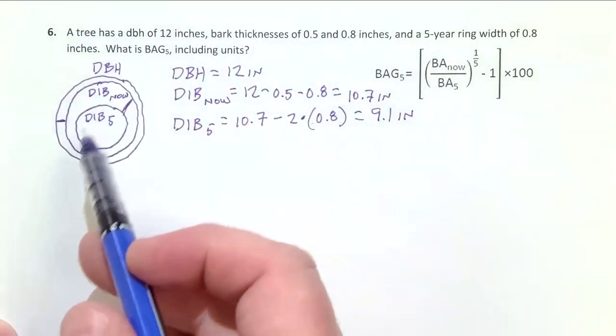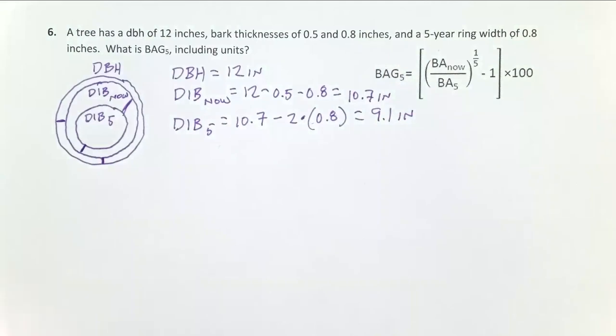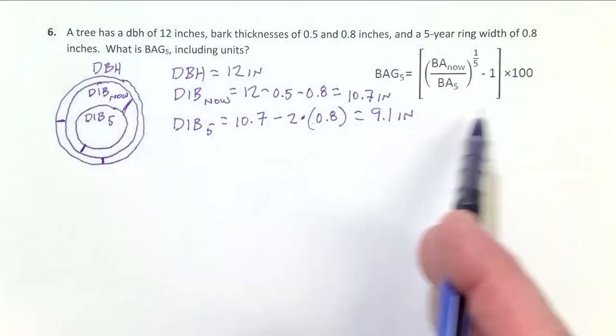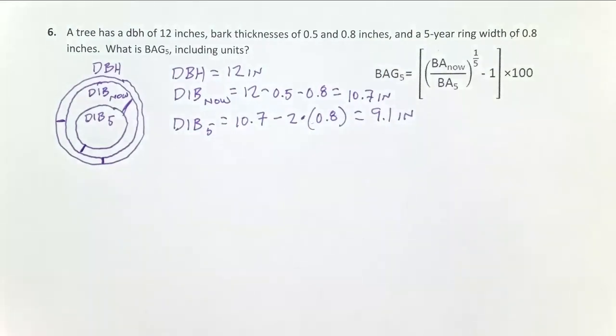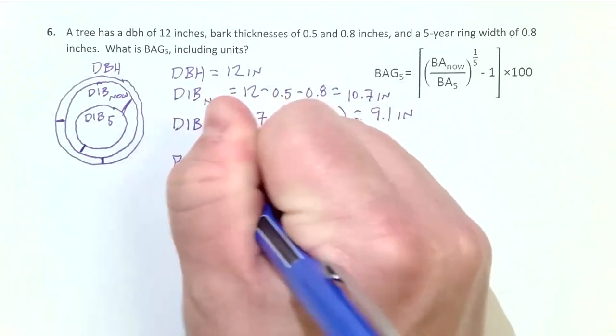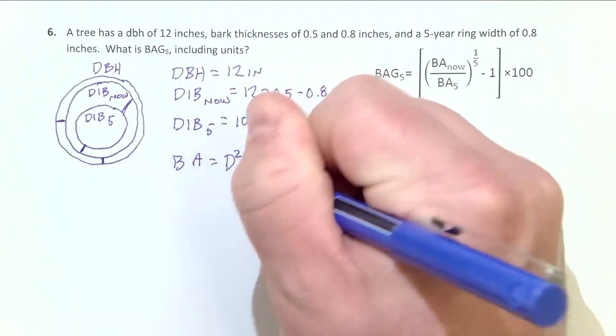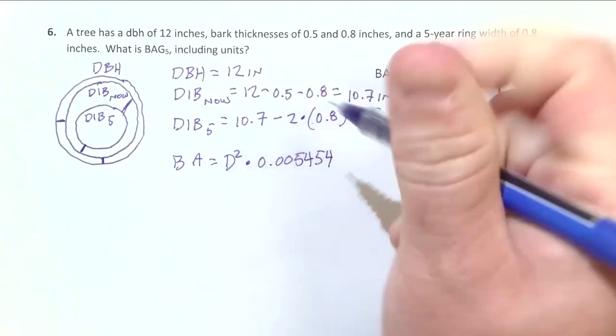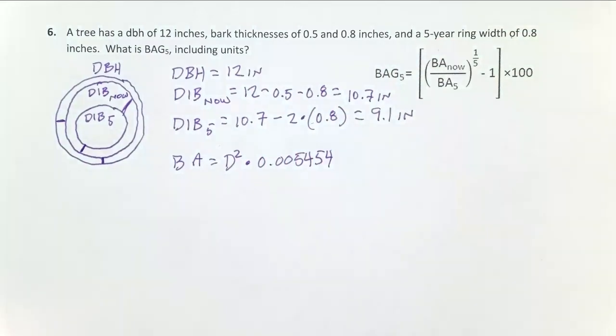So now we have these three diameters. We really aren't going to use DBH further. We'll be focused on the diameter inside the bark now and the diameter inside the bark five years ago. Now you can see in the equation you've been given, it includes basal areas, not diameters. So you need to have a formula memorized to convert diameters to basal areas. In English units, that formula is basal area equals diameter squared times 0.005454. This 0.005454 is simply combining constants like pi with unit conversions where there's 144 square inches in one square foot.